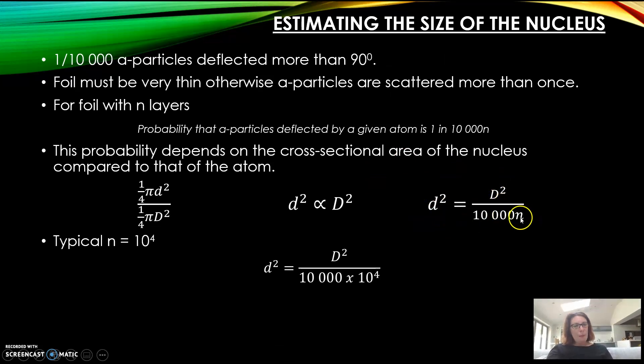But you don't know n. It tells you the diameter of the atoms which is big D, but it also tells you the thickness of the foil. So if you divide the thickness of the foil, which is 10 micrometers, by the diameter of the atoms, it should tell you how many atoms there are, so how many layers there are.